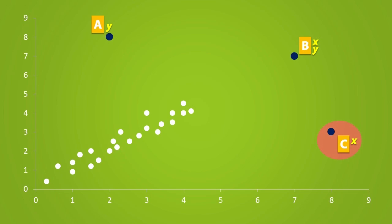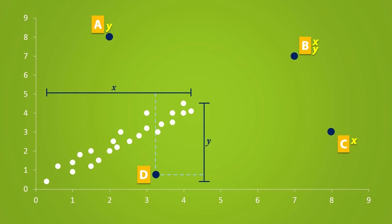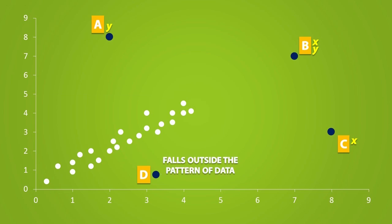What happens if I insert point D right here? Is it an outlier in the Y direction, the X direction, or both? It is certainly not an outlier because it falls within the general Y interval and the X interval. However, point D falls outside of the pattern of data. Because it is not an outlier in the X or Y direction but falls outside of the pattern of data points, point D is called a bivariate outlier.